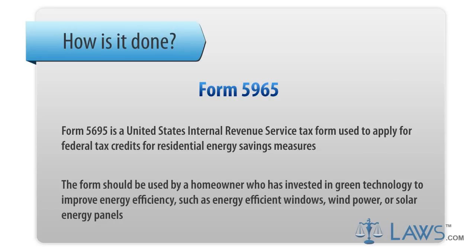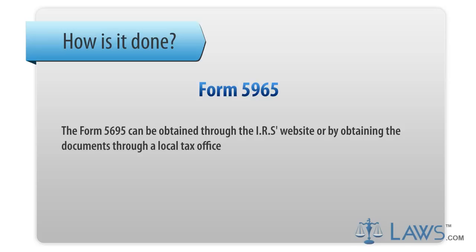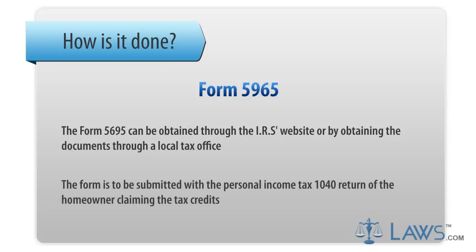The form should be used by a homeowner who is invested in green technology to improve energy efficiency, such as energy-efficient windows, wind power, or solar energy panels. Form 5695 can be obtained through the IRS's website or through a local tax office, and is to be submitted with the Personal Income Tax 1040 return of the homeowner claiming the tax credits.